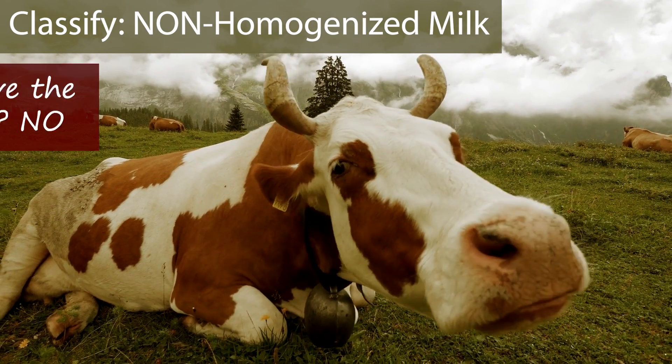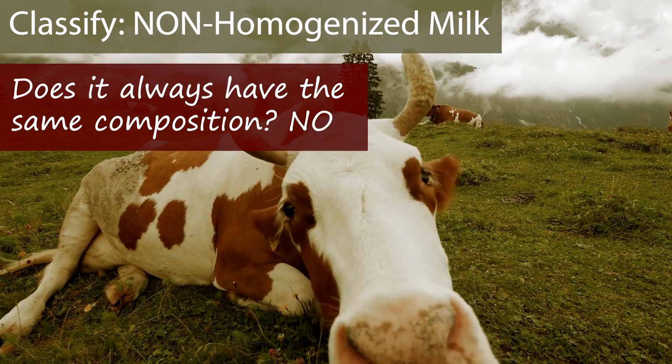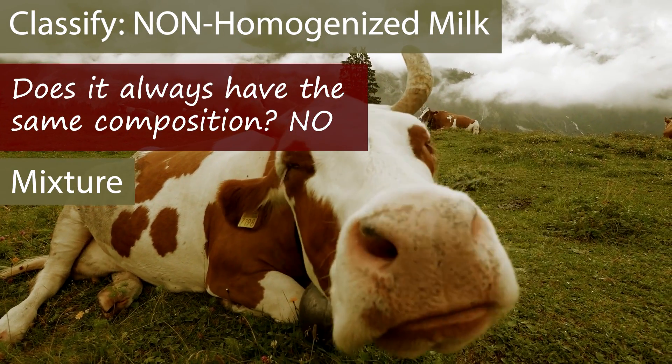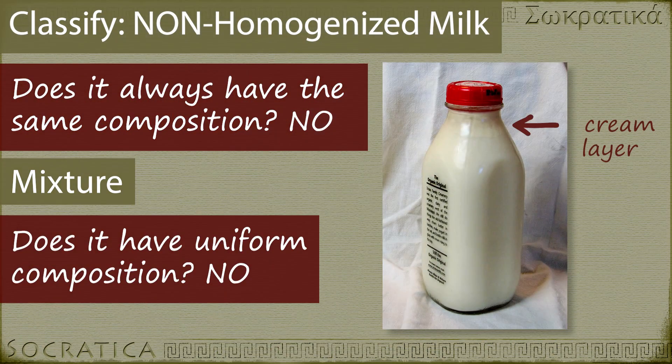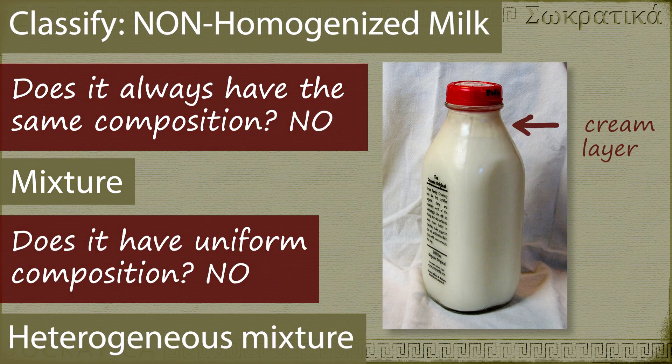If you don't homogenize milk—like when you get it straight from a cow—that's actually a heterogeneous mixture. If you let it sit for a bit, you'll see cream rise to the top, making it very clear there are phases in that mixture.